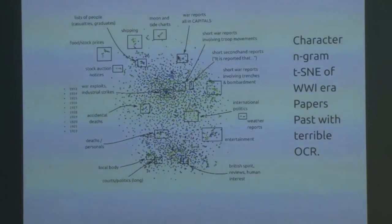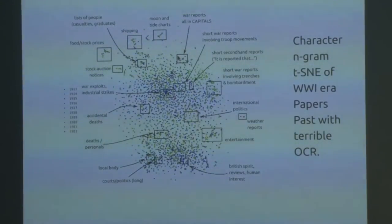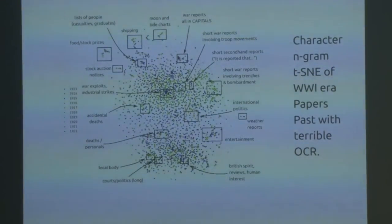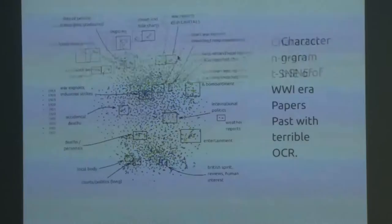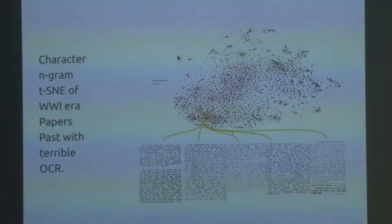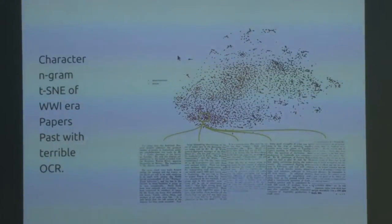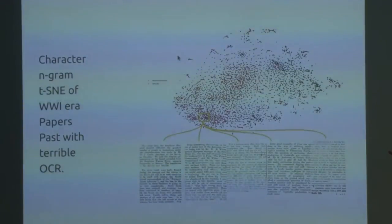If you could zoom in and click on those, you'd see they were all little short stories about trench warfare, and another cluster about group movements — thirty miles from Belfast, that kind of thing. Now, in the Papers Past corpus there are articles and advertisements. When you plot them, the red dots are articles and the black dots are advertisements, and they separate quite nicely.